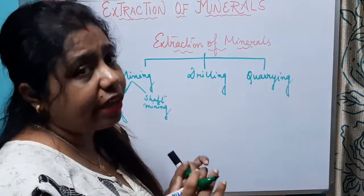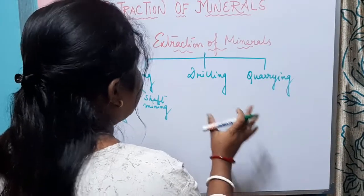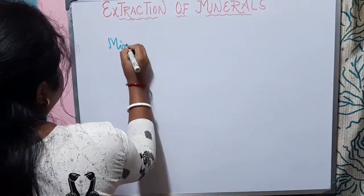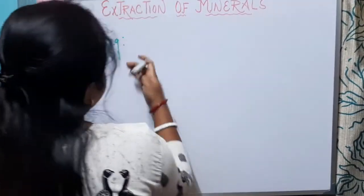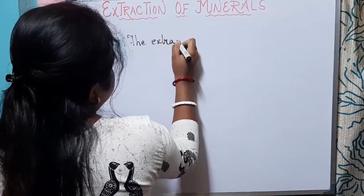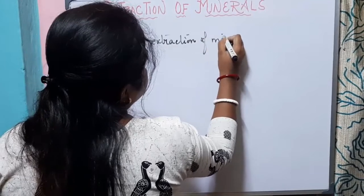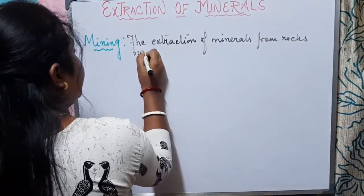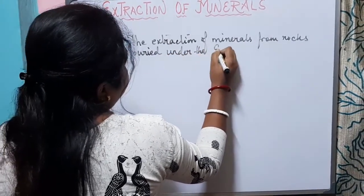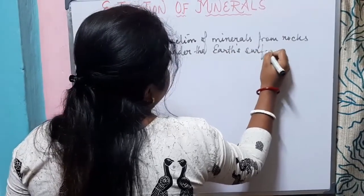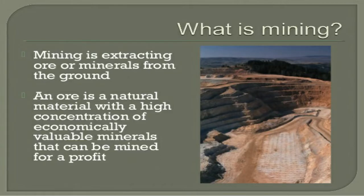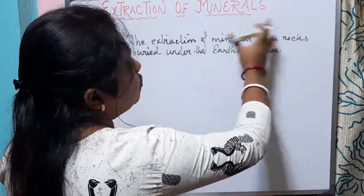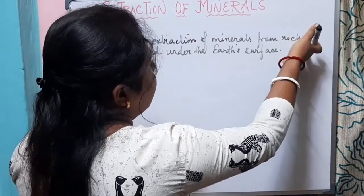The extraction of minerals is carried out by three processes: mining, drilling, and quarrying. Let us understand each one by one. Mining is referred to as the extraction of minerals from rocks. We know that rocks are made of minerals — an aggregate of two or more minerals forms a rock.